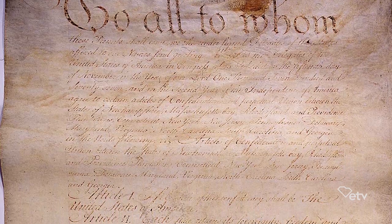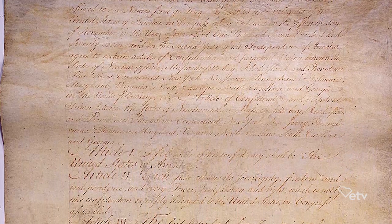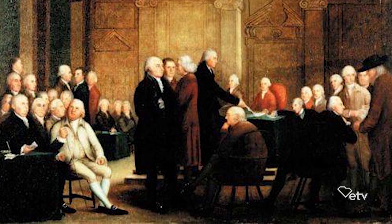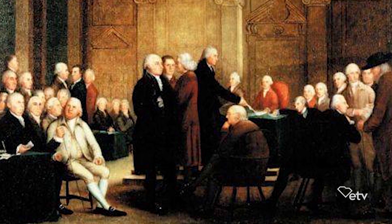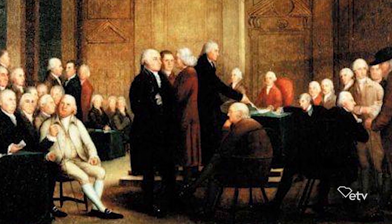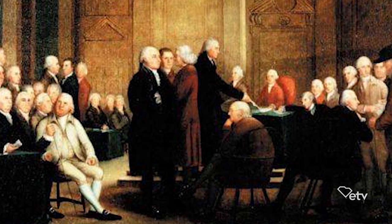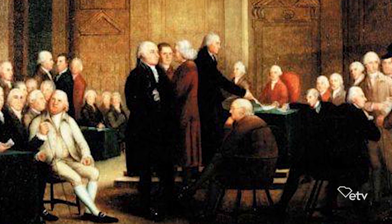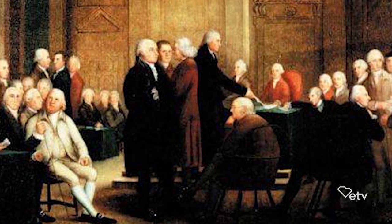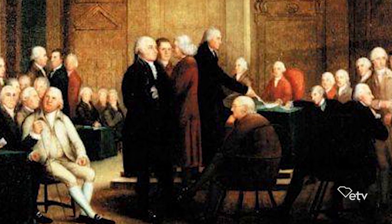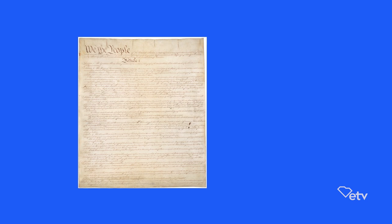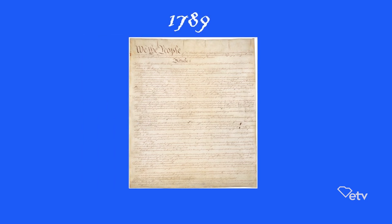The Articles of Confederation served as America's first constitution. It was approved by the Second Continental Congress in 1777; however, it did not fully go into effect until 1781. The Articles ultimately failed and was replaced by the U.S. Constitution in 1789.